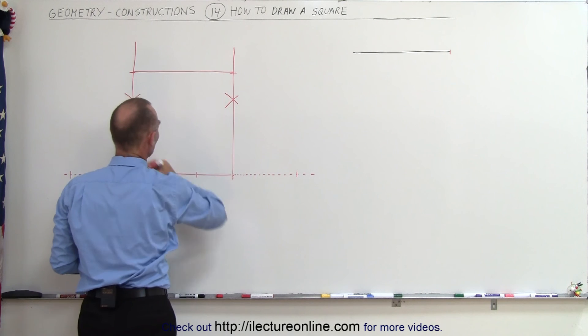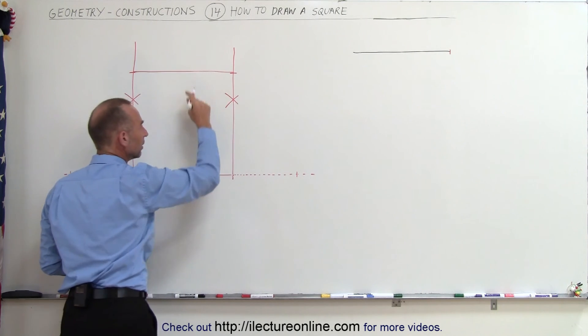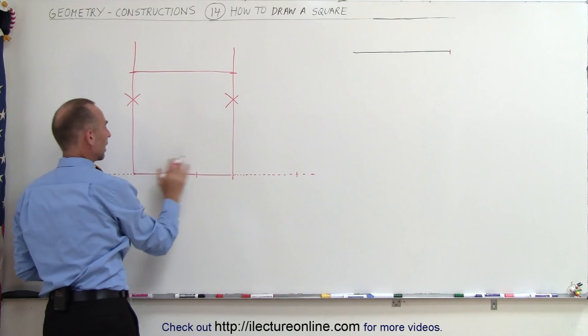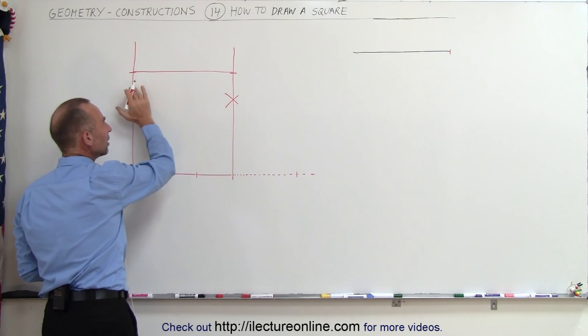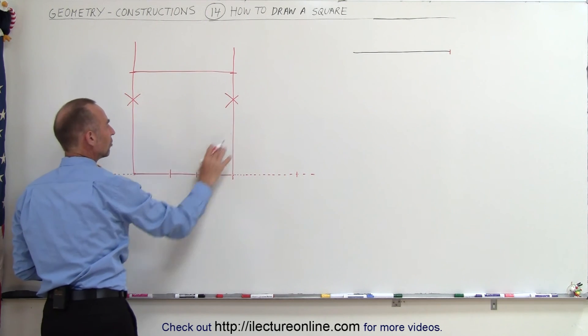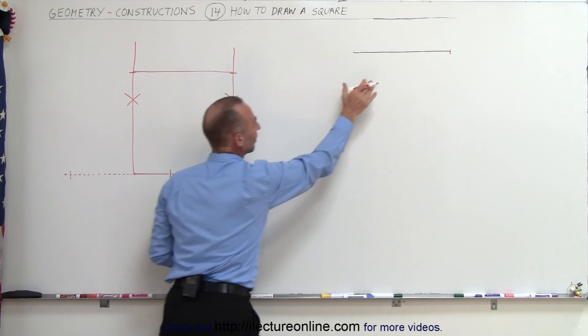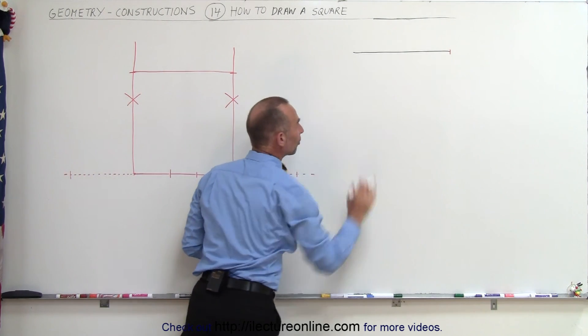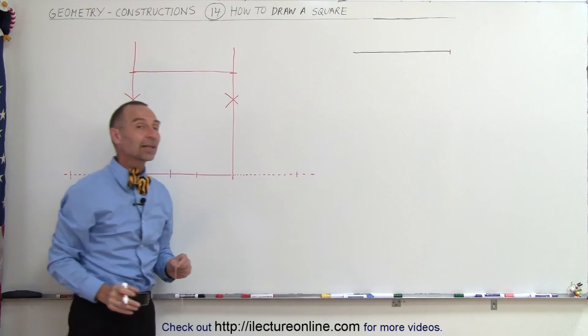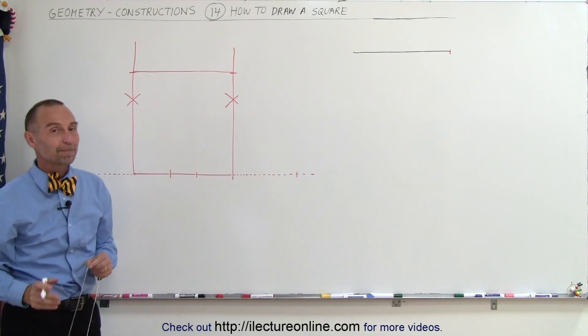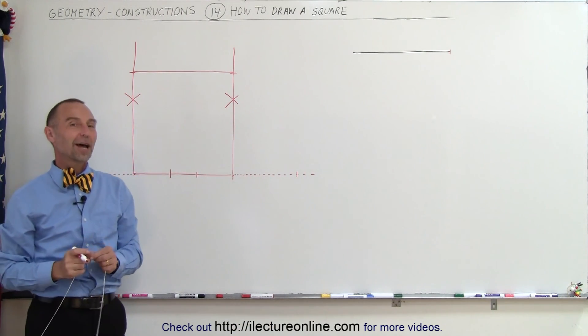Then all you have to do, finally, is connect those two points across. And now I have a square. All angles are 90 degrees, and each side has the exact same length as the original line segment that I started with.